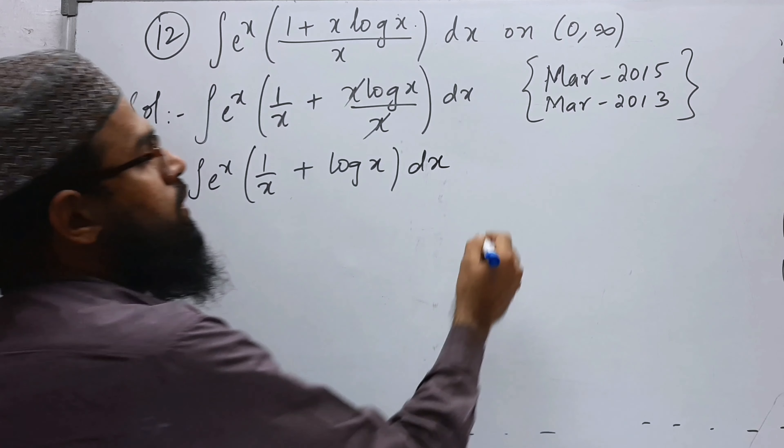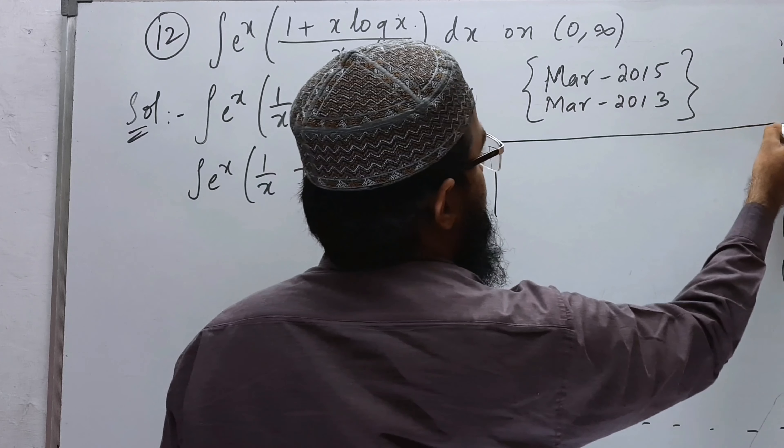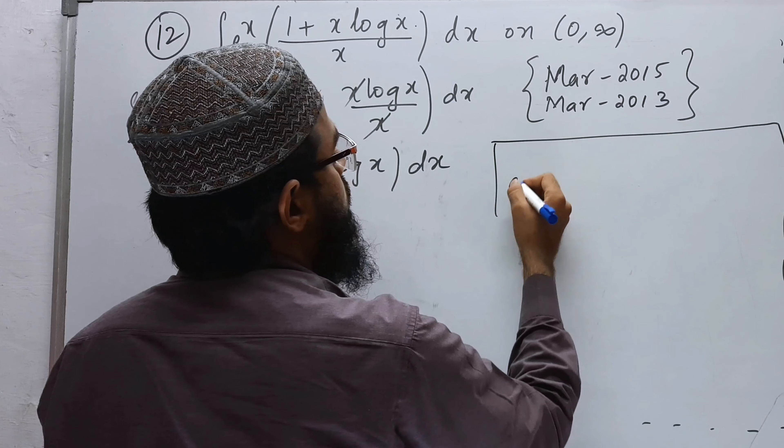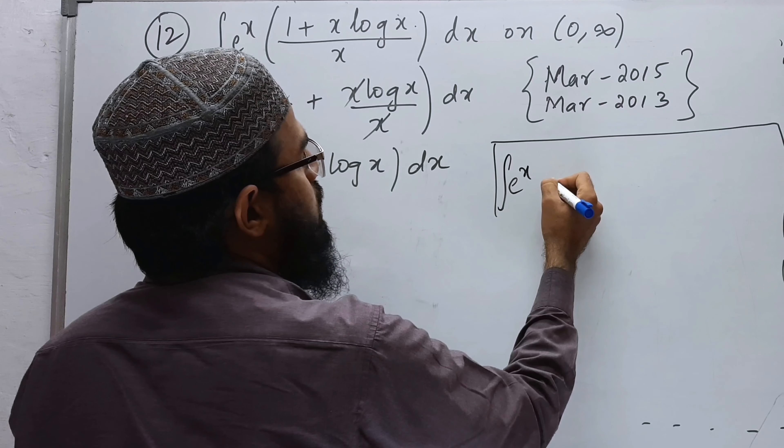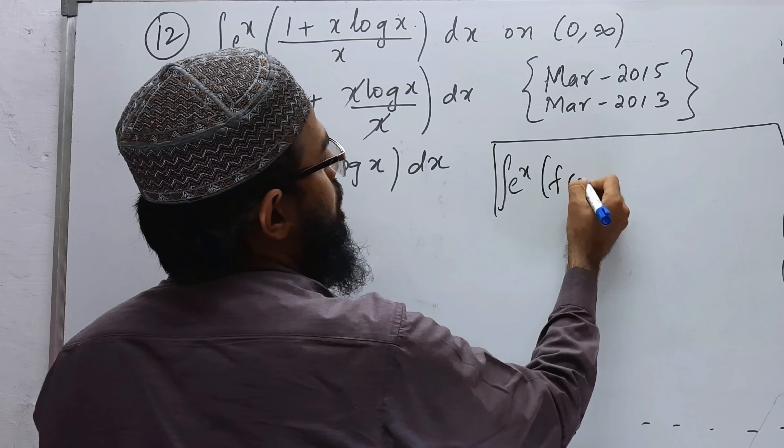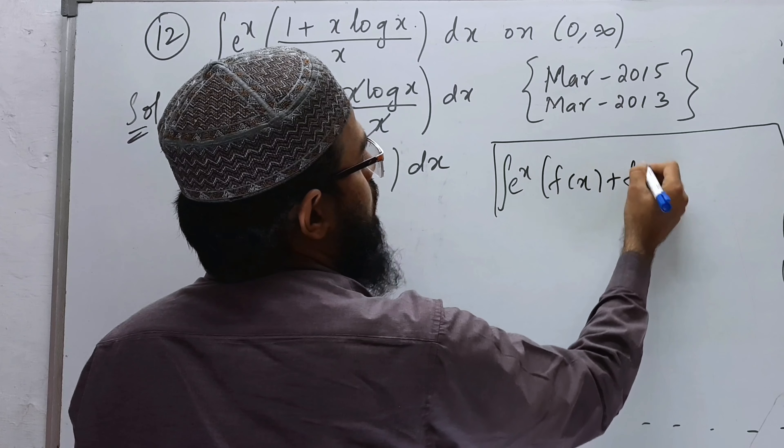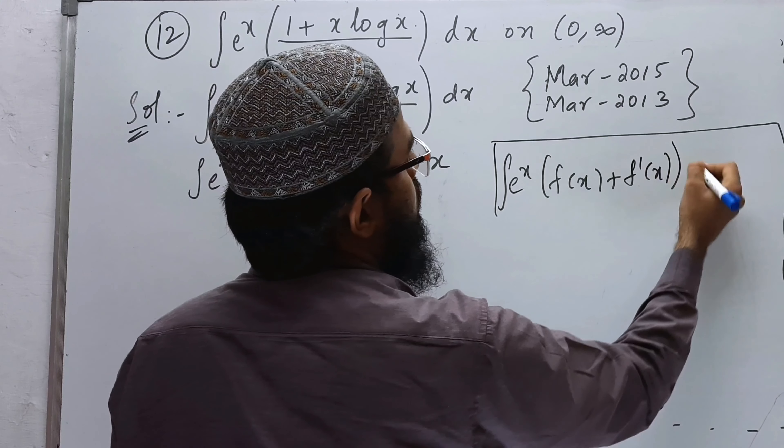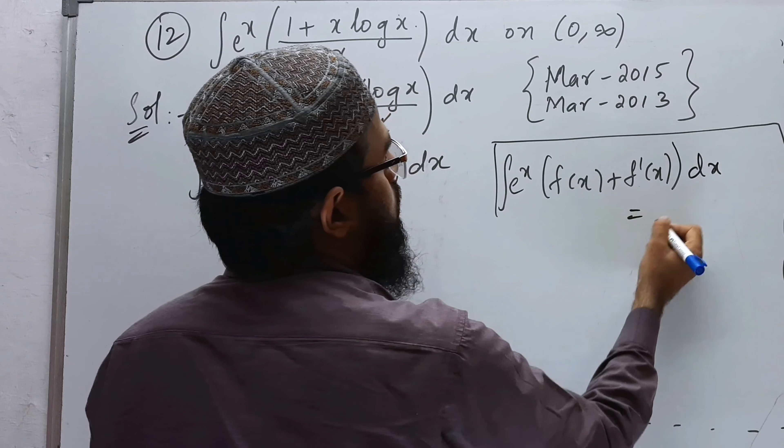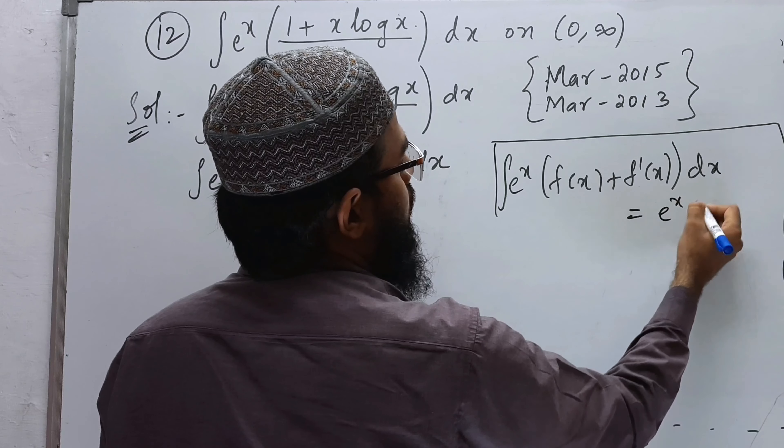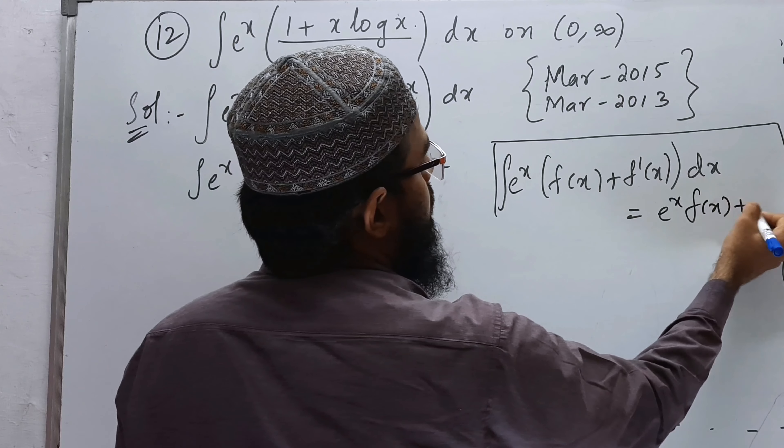It is in the formula. What is the formula? Integration of e to the power of x, f of x plus f dash of x dx equals e to the power of x, f of x plus c.